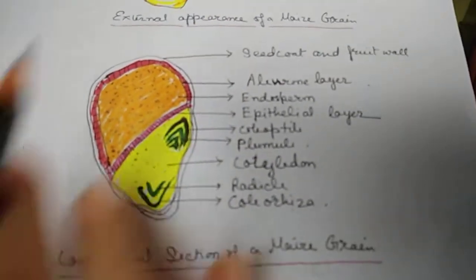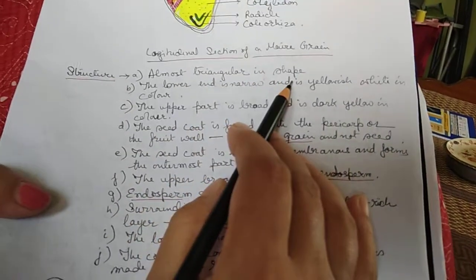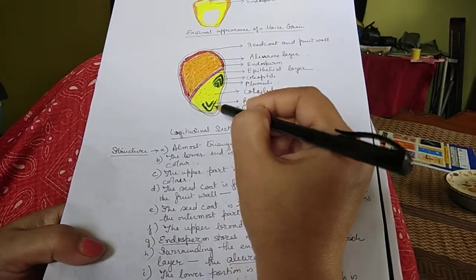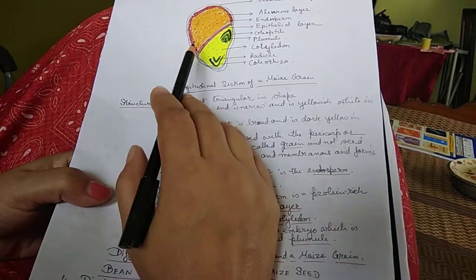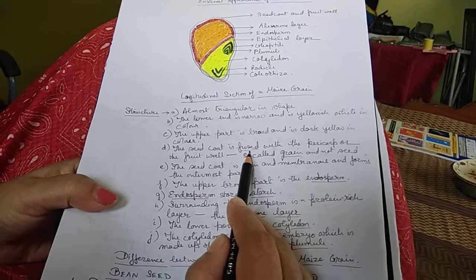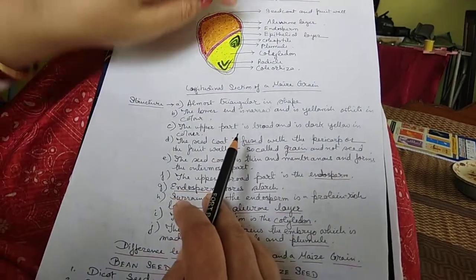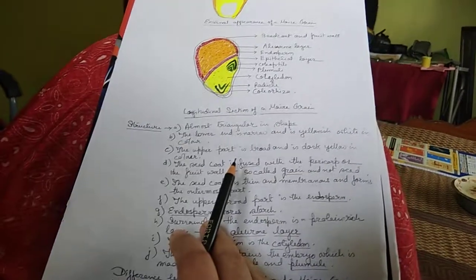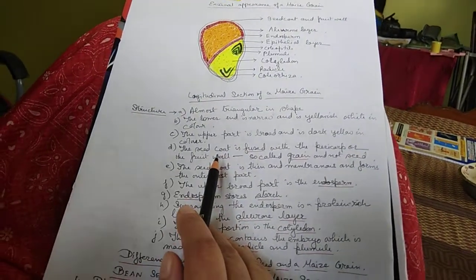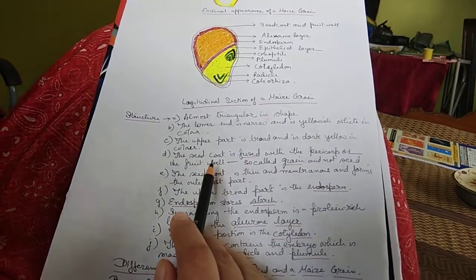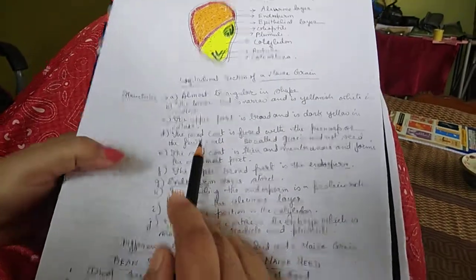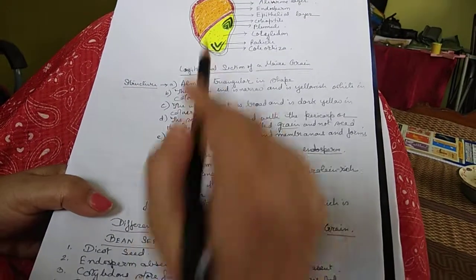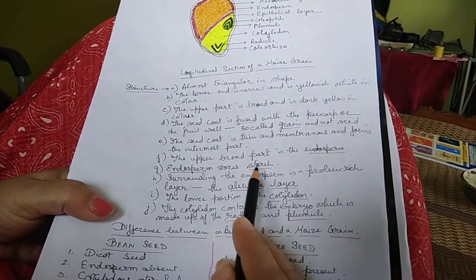The maize grain is almost triangular in shape. The lower end is narrow and yellowish-white in color; the upper part is broad and dark yellow in color. The seed coat is fused with the pericarp or fruit wall — they are not separate — and so this seed is called a grain. The seed coat is thin and membranous, forming the outermost part. The upper broad part contains the endosperm, which stores starch.